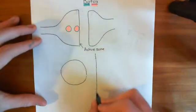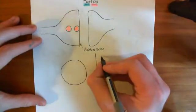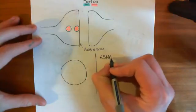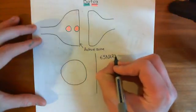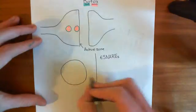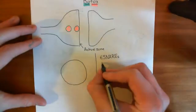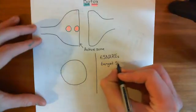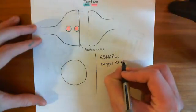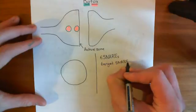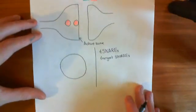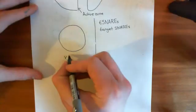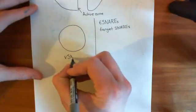There are SNARE proteins which are on the plasma membrane — so-called T-SNAREs, for target SNAREs — because the plasma membrane is viewed as the target membrane for the fusion of the vesicle. And there are also SNARE proteins in the vesicle, and they're going to fuse together to make a core SNARE complex.